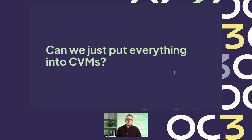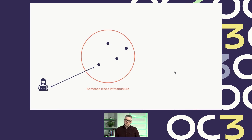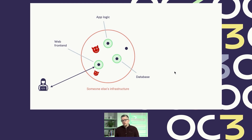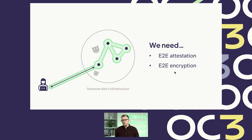A common question I get asked is: can I just put everything into a confidential VM? The answer is, most of the time, no. If you're putting parts of your application into confidential VMs, you only get point protection for those parts. A lot of attack surface remains, where attackers from the infrastructure can duplicate nodes, restart nodes, downgrade nodes, or add nodes that aren't supposed to be talking to your nodes. You need to implement attestation end-to-end and encryption end-to-end to get one coherent confidential computing context.